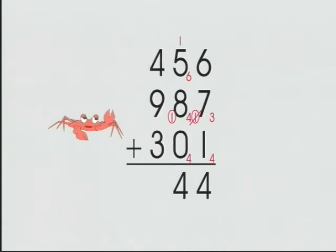Move the 100s to the 100s column. 1 plus 4 is 5, 5 plus 9 is 14.